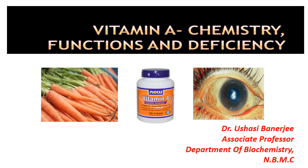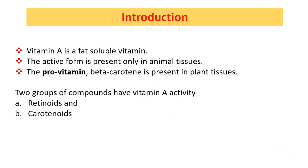Good morning dear students. Today we will discuss about vitamin A — its chemistry, its function and deficiency. Vitamin A is a fat-soluble vitamin just like D, E and K. The active form is present only in animal tissue, whereas the pro-vitamin form, beta-carotene, may be present in plant tissues also.